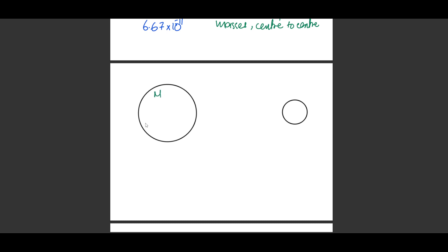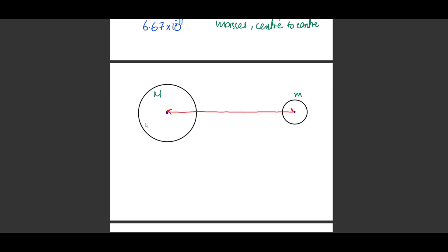Let's say we have two masses: capital M is the larger or first reference mass, and small m is the second. The center-to-center distance is R. Sometimes the examiner gives distances in different formats — distance above the surface, the radius of the planet, distance between surfaces. No matter how the distances are given, we always consider R to be from the center of the first mass to the center of the other mass in the formula.